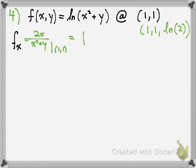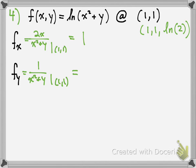The partial derivative with respect to y: the derivative of ln is 1 over (x squared plus y), and treating x squared as a constant, that goes to 0, while the derivative of y is 1. Evaluated at (1, 1), you get 1 over (1 plus 1), which is 1/2. So the slopes at that point are 1 in the x direction and 1/2 in the y direction.